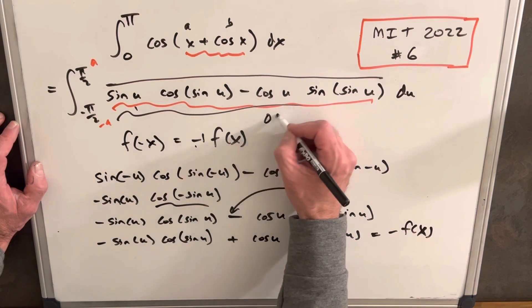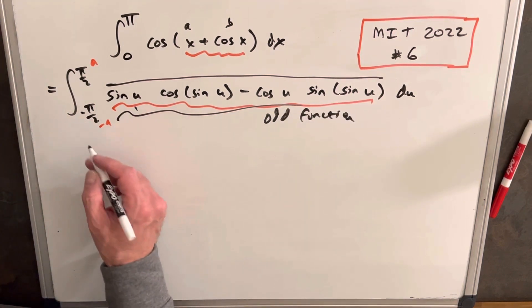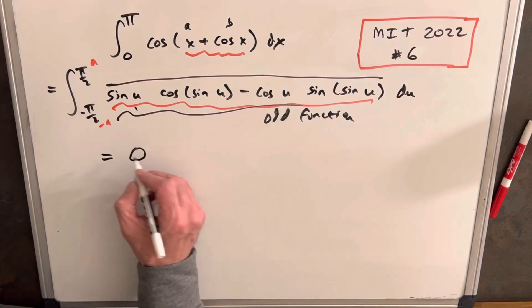So this whole thing is an odd function. And so therefore, we have this set, we have an odd function, and we have this a to the minus a situation. So then the answer is going to have to be zero.